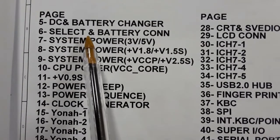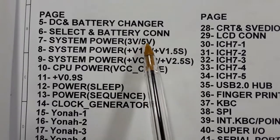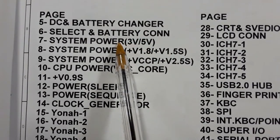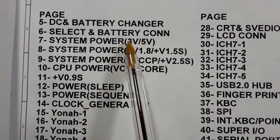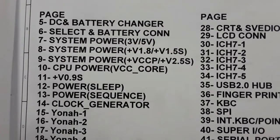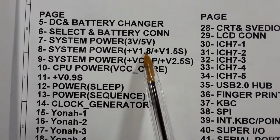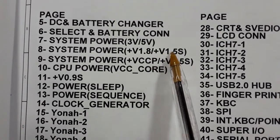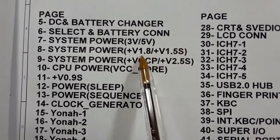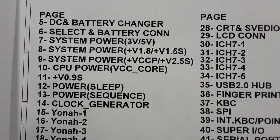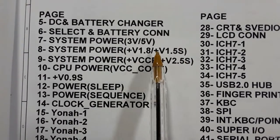In page number six we have the battery selector and battery connector. In page seven we have system power three volt and five volt — this is the circuit where we get 3V and 5V. In page eight we have system power plus 1.8 volts and 1.5 volts, which is the power for the GMCH and also for the RAM. The RAM in this motherboard is DDR2.